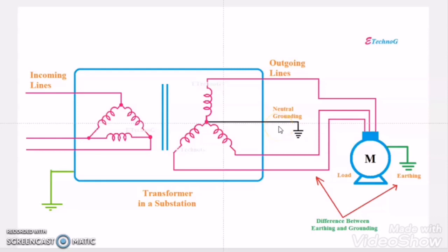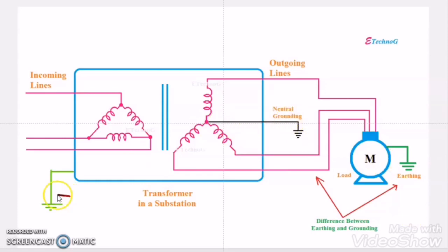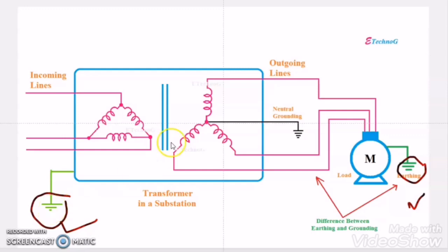Grounding is allowed only at the source side, but earthing we can do anywhere — at the source side as well as at the load side. Here you can see that this motor is the load for the transformer. We did the earthing for this motor, and we also did earthing for the transformer body. But grounding we have done only at the source side, not at the load side. At the pit level, grounding and earthing look exactly the same — the difference lies in whether the dead part or the live part of the equipment is connected to earth.